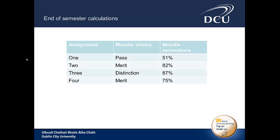An additional benefit is Moodle's memory when it comes to scales and letters. If we use a course with four assignments for this example, the lecturer provides a mark and Moodle converts it into either a fail, pass, merit or distinction and displays this to the student, but crucially does not display the mark provided. However, Moodle remembers the mark the lecturer gave. This is important because Moodle will use the individual marks from each assignment to calculate the end of semester results. In addition, Moodle can also weight the assignments, therefore removing a big calculation headache for the lecturer at the end of the semester.